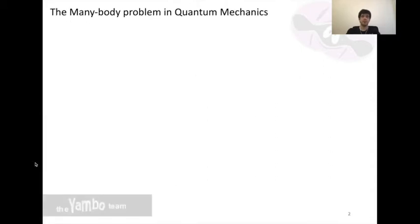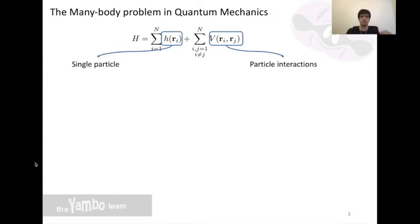As with many problems in physics, we begin with a Hamiltonian. In a system with more than one particle, we can separate the Hamiltonian into two terms: the first containing only single particle interactions, and the second with all particle interactions.